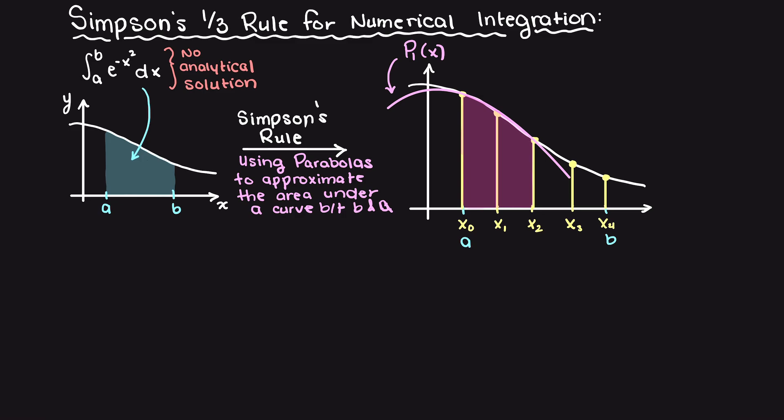And to that we will add the result of our second parabola, p2 of x, which will be fit to points x2, x3, and x4, and this orange area will be our area under the parabola.